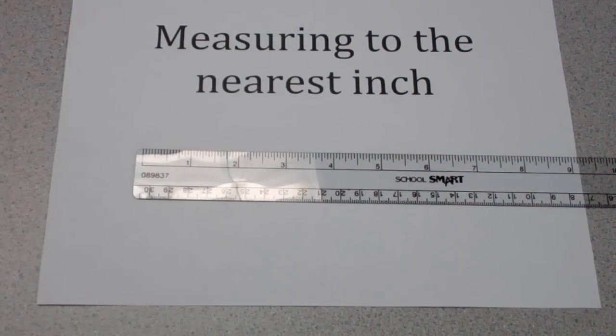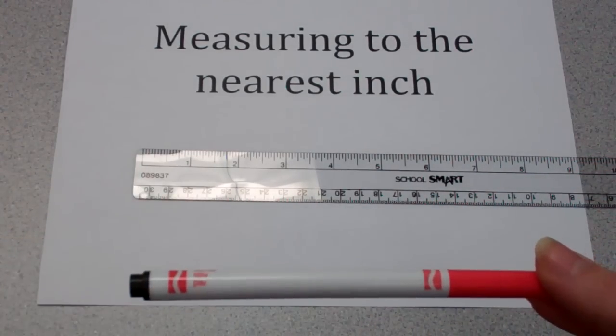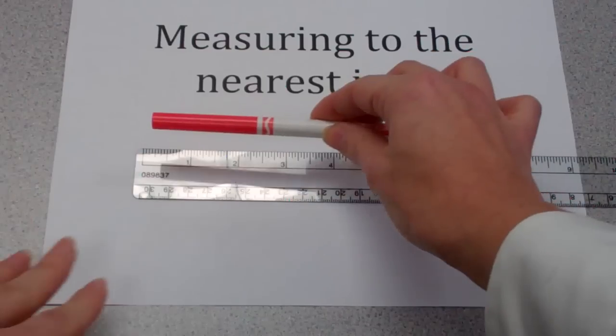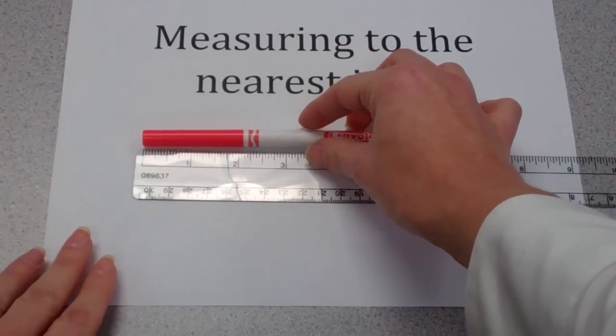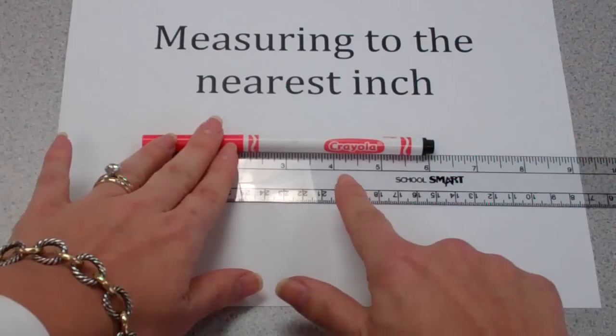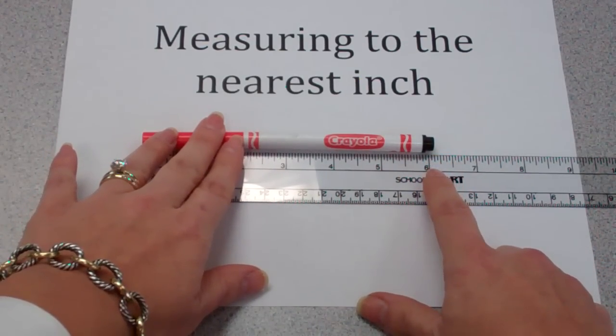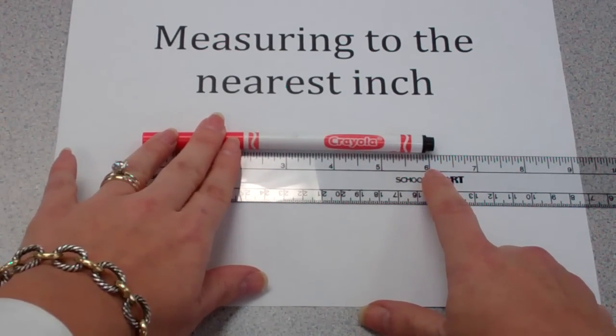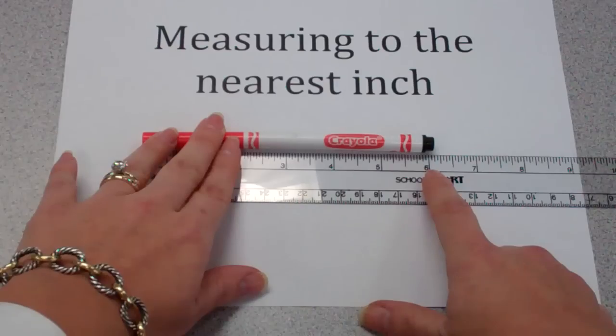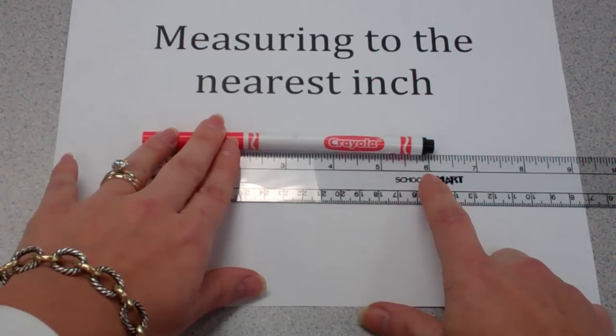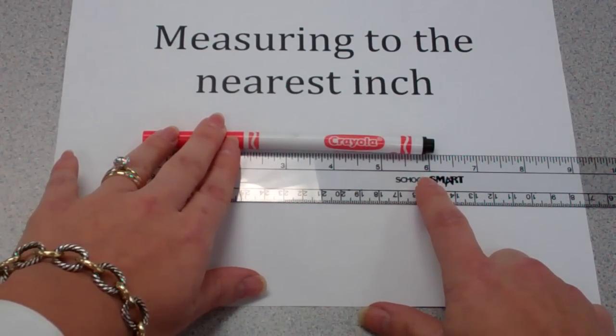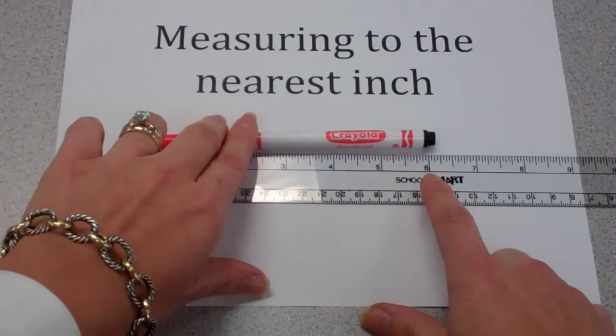Let's practice that with another object. Measuring to the nearest inch, I might try measuring the length of this marker. Again, I'll line up my marker starting with the first hash mark on my ruler, and I'll measure it all the way to the end of the marker. I see here that this marker measures very close to the number six on my ruler. So this marker, if we were measuring it to the nearest inch, we would say it is six inches long.